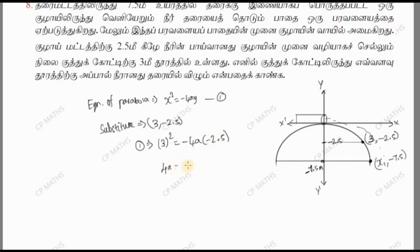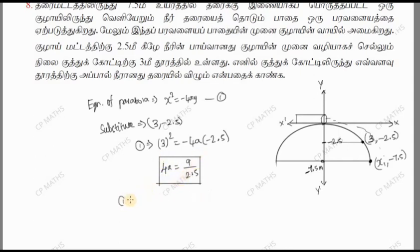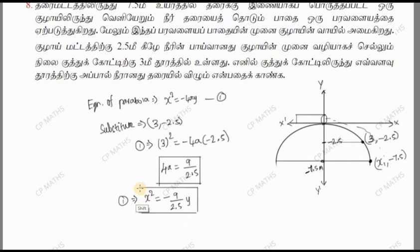3 squared equals 9, so 9 equals minus 4a times minus 2.5, which gives minus minus, so plus. Therefore 4a equals 9 divided by 2.5. Dividing through, x² equals minus 9 by 2.5 times y. This is the required parabolic equation.